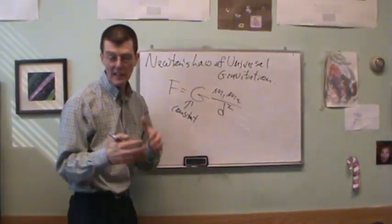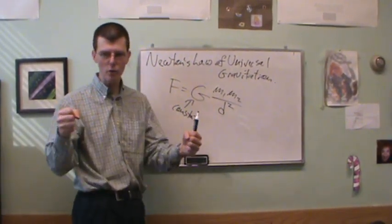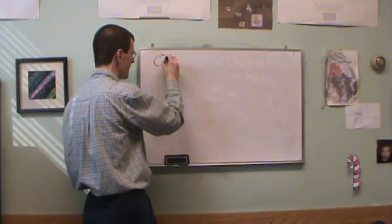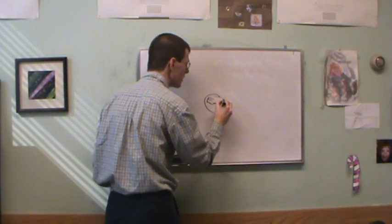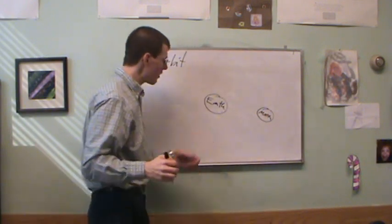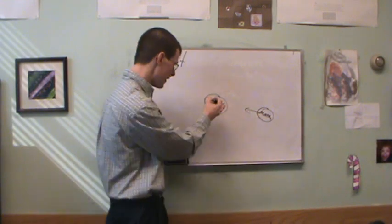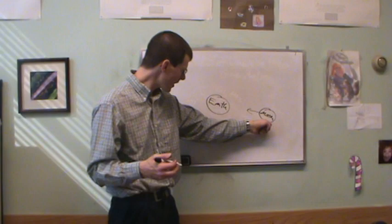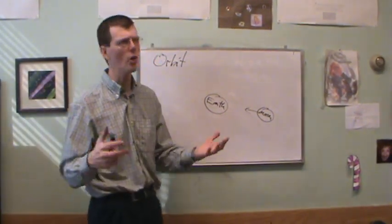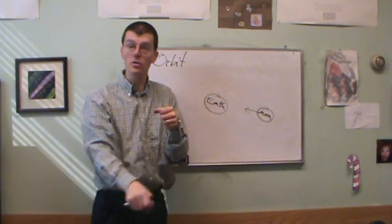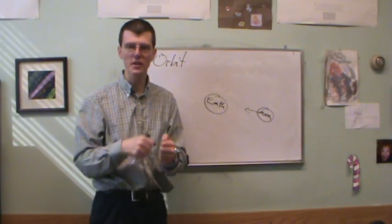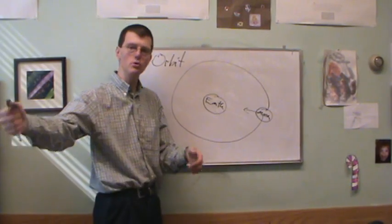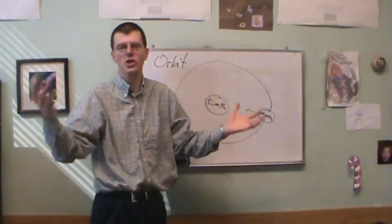The force of gravity pulls every pair of objects straight toward each other. So how does this work to make orbits? The Earth is orbited by the moon. The Earth pulls the moon toward it with gravity, and the moon pulls the Earth back. But if gravity pulls the moon directly toward the Earth, why does the moon orbit in an ellipse instead of just falling straight into the Earth?